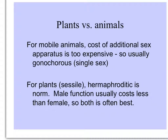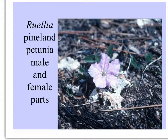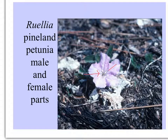But for plants, which are sessile — attached to the substrate, not moving around — hermaphroditic is the norm, because the male function is usually much less expensive than female, so it's more economical to have both. Here's a big, beautiful flower on a tiny little plant in the pine rocklands. The pineland petunia in the genus Ruellia has a perfect flower with both male and female parts: the little white things ringing the center are the anthers that hold the pollen, and the little cross-shaped stigma is where pollen is received.